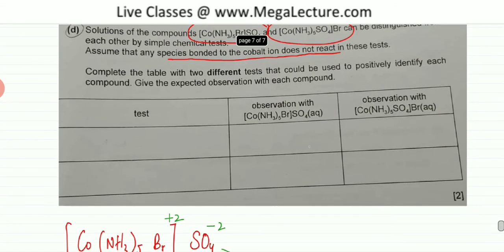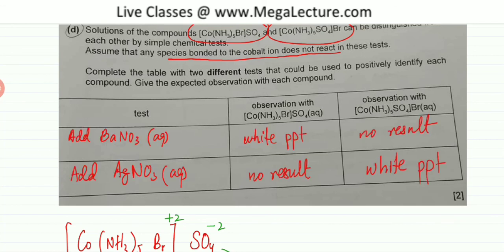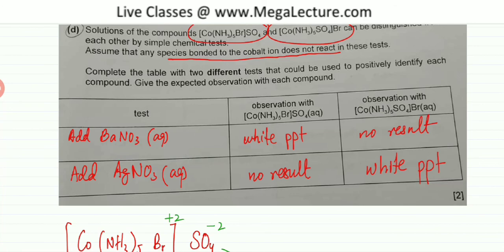To complete the table: the test using barium nitrate — compound 1 has SO4 so it gives a white precipitate, while compound 2 gives no result. For the silver nitrate test, compound 1 gives no result since SO4 minus 2 does not react, but compound 2 with Br minus 1 reacts to give a cream precipitate. These two different results allow you to distinguish between the two compounds.